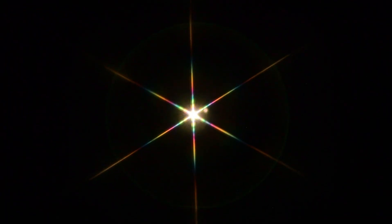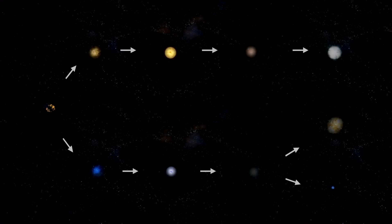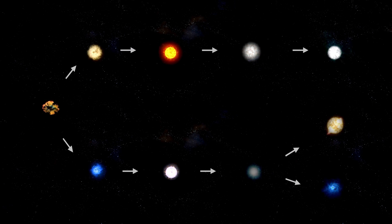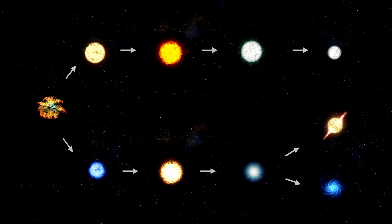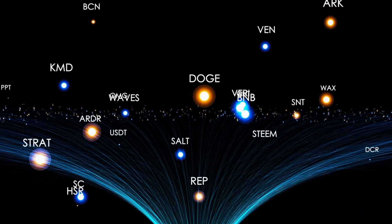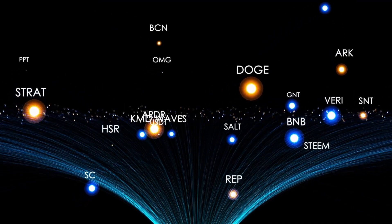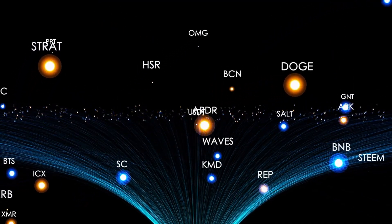The presence of star spots is not unique to Betelgeuse. Many stars, including our own Sun, have them. However, the star spots on Betelgeuse are particularly interesting because they are much larger and more numerous than those on the Sun. The spots on Betelgeuse can be several times the size of Earth and cover up to 20% of the star's surface.